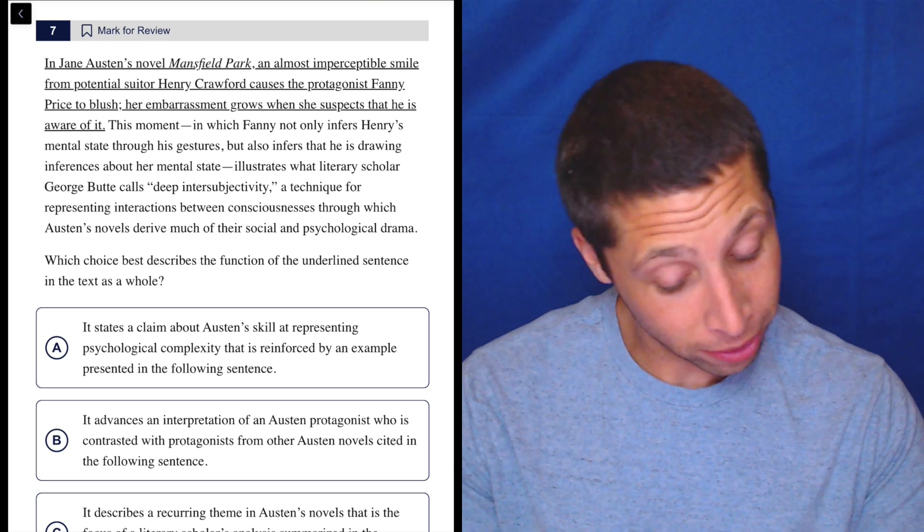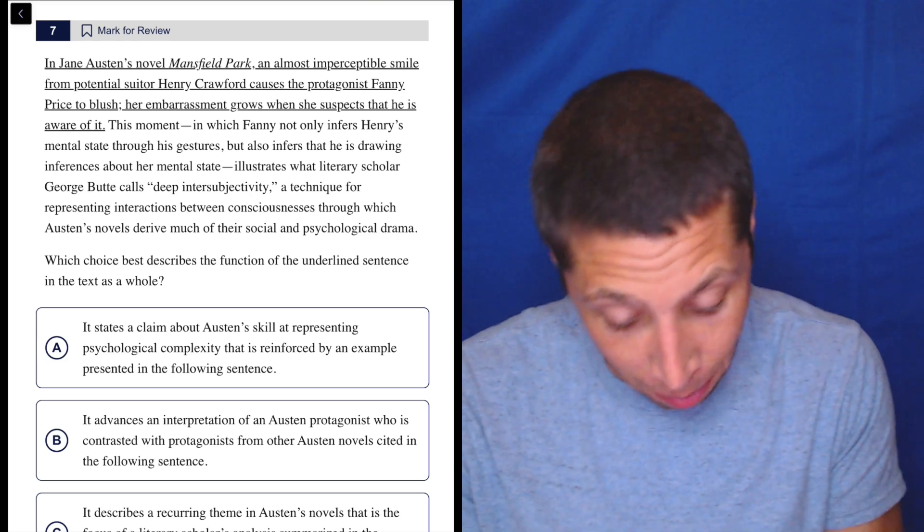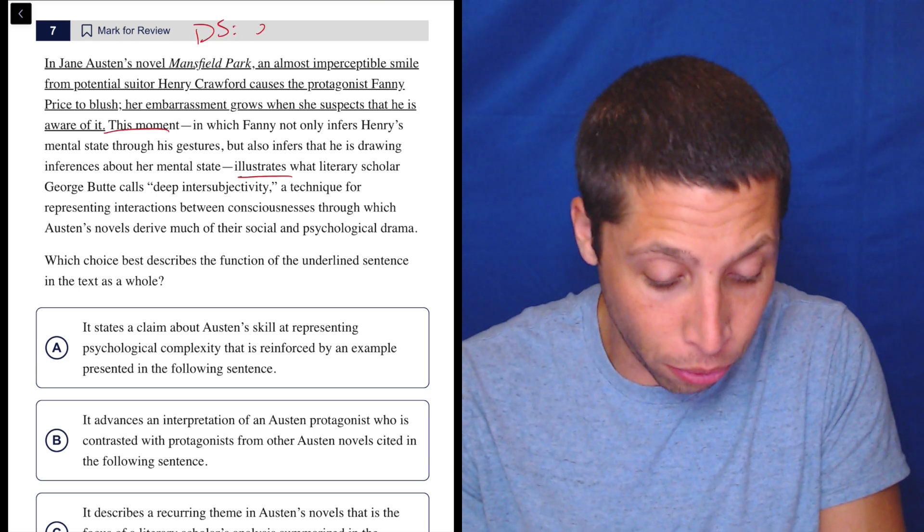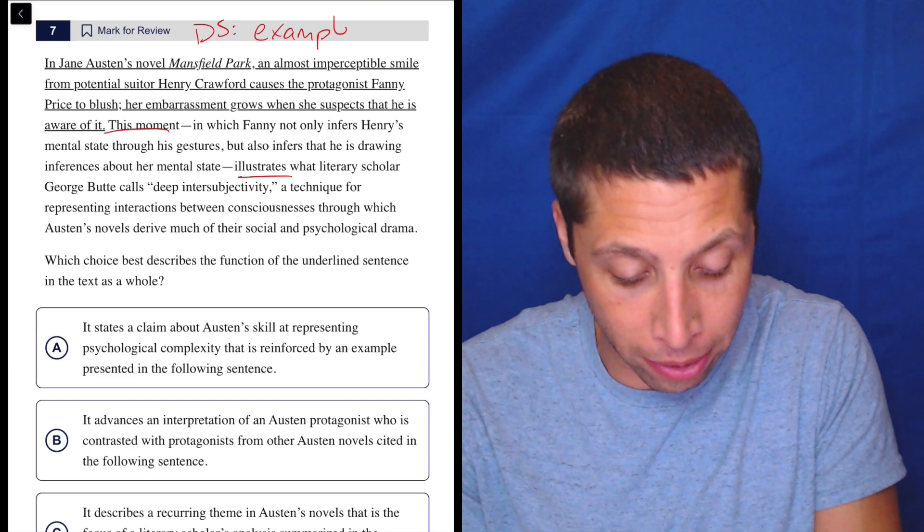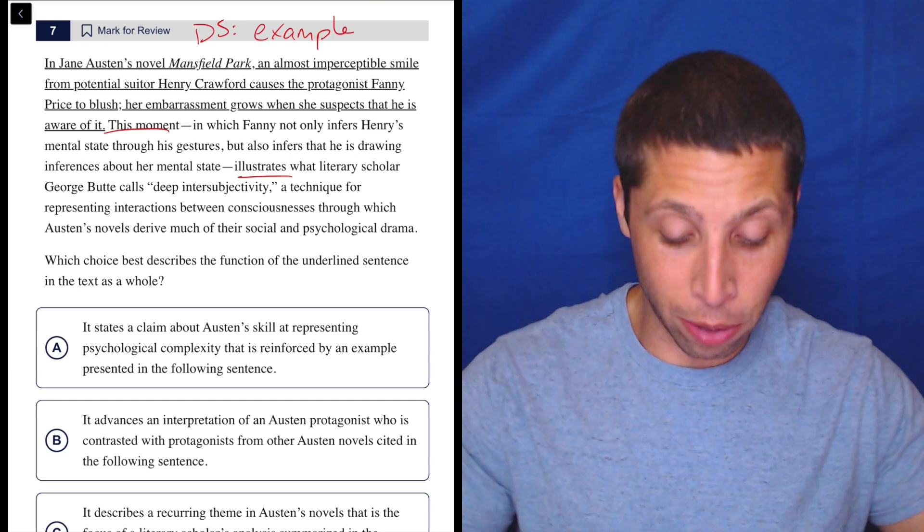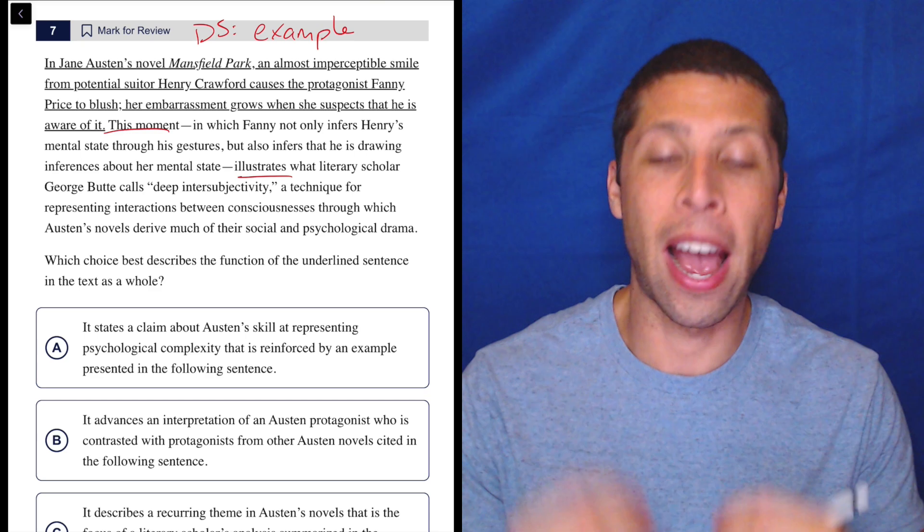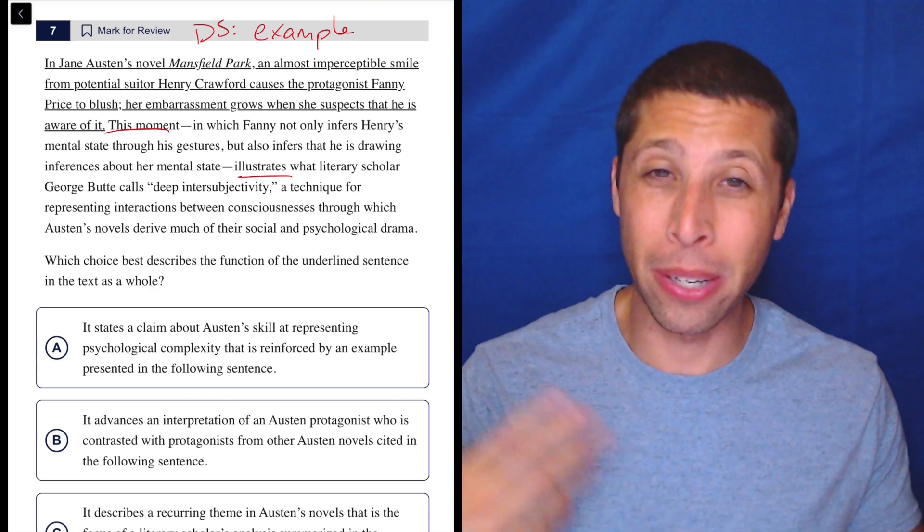I barely understand this, but it seems to suggest - my dumb summary is this whole thing is an example of something we talk about later. So hopefully, you know, this is question seven in this little series here.